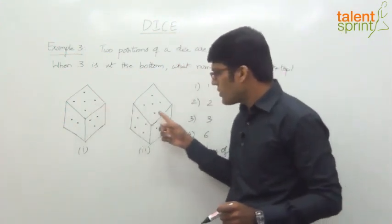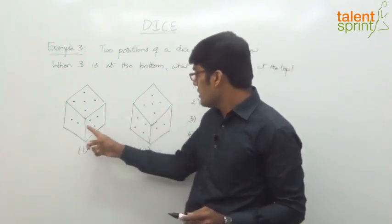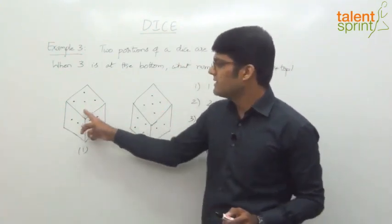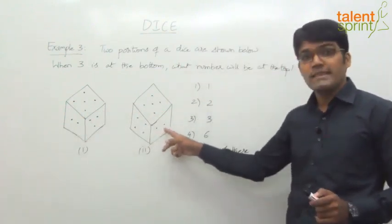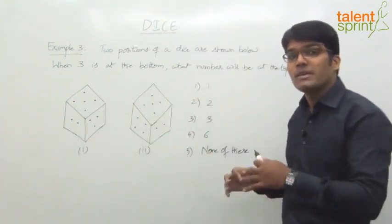Here if you observe, 5 is common in both the sides and also 2 is common, right? You see 5 and 5, 2 and 2. So in that case, if we try to go by this method, you will get stuck.